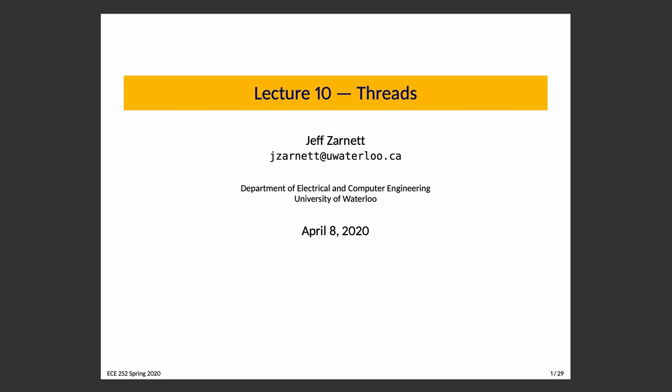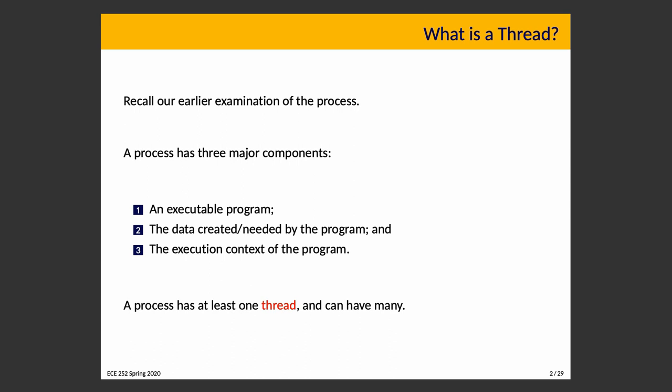Lecture 10: Threads. Not long ago we discussed what makes a process — it has three major components: the executable program, the data created and needed by the program, and the execution context of that program. A process is a program in execution, and it has at least one thread and can have many. But what's a thread?